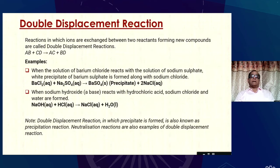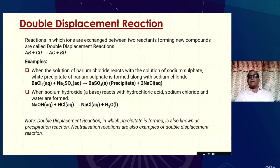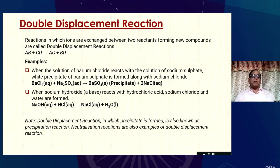What is a double displacement reaction? Reactions in which ions are exchanged between two reactants forming new compounds are known as double displacement reactions: AB + CD → AC + BD. For example, barium chloride solution reacts with sodium sulfate solution to form a precipitate of barium sulfate along with sodium chloride. When sodium hydroxide (a base) reacts with hydrochloric acid, sodium chloride and water are formed. Double displacement reactions in which a precipitate is formed are known as precipitation reactions. Neutralization reactions are also examples of double displacement reactions.